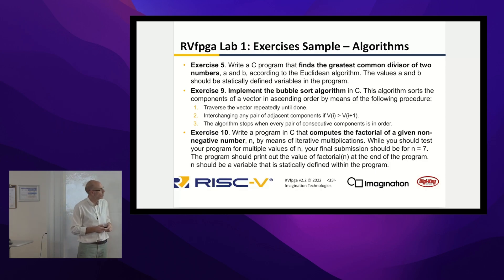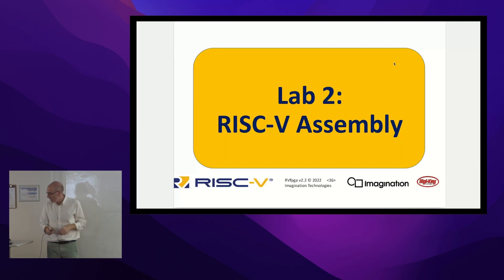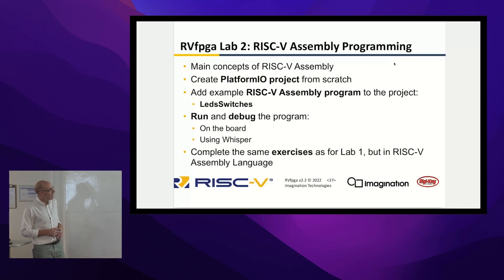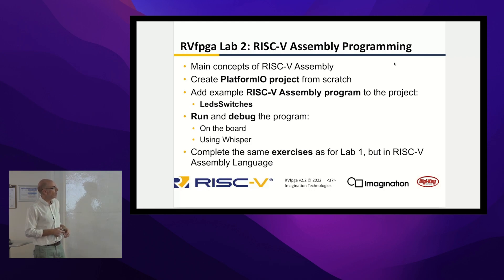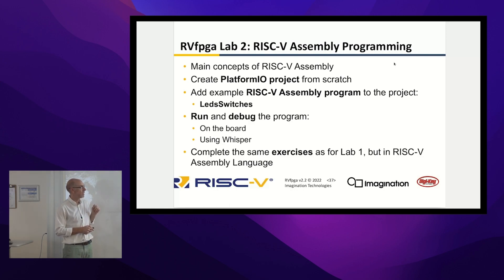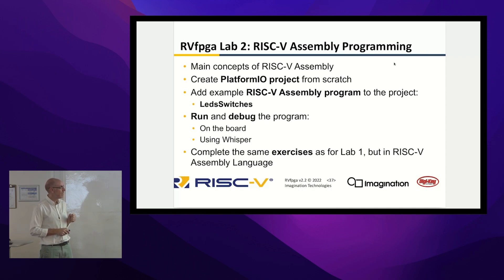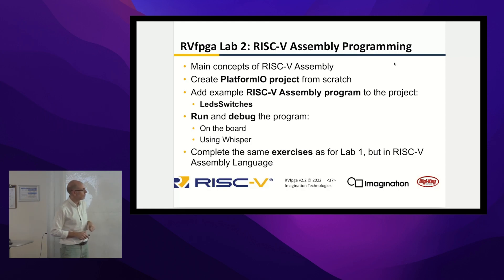In lab two we analyze RISC-V assembly. We explain in detail the main concepts of RISC-V assembly, show the different instructions supported by the SweRV EH1 core, and explain the available registers. We then create a PlatformIO project from scratch using an assembly program — the LED switches example programmed in RISC-V assembly — and show how to run and debug on the board and using Whisper. The same exercises as lab one are proposed, now in RISC-V assembly, and solutions are provided.